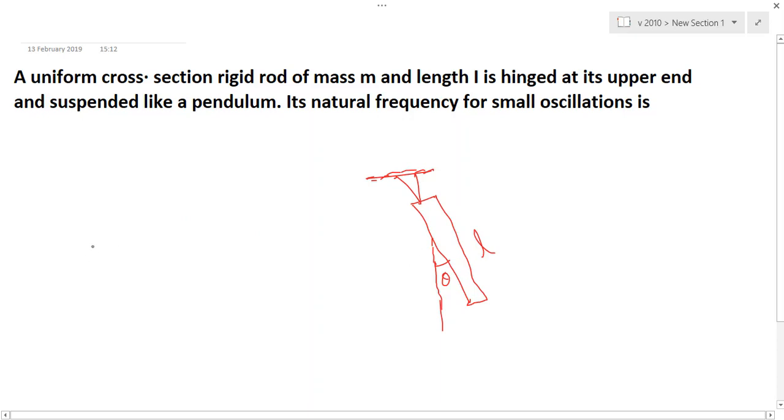So the equation of this system is, if we find out the equation of this system, then I theta double dot plus mgl theta is equal to zero.